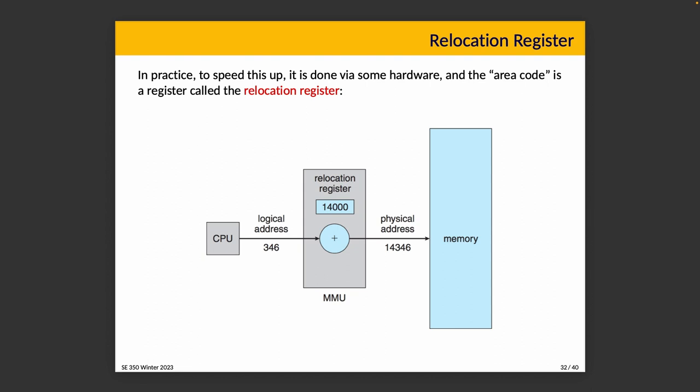In this example, adding a two or nine or 14 at the front is pretty clean, but there's no reason the relocation register has to be a round number. The relocation register could contain a value like 14,222. In that case it's a little harder to read the physical address, but the addition is the same — we just used clean examples to make it easier to follow.